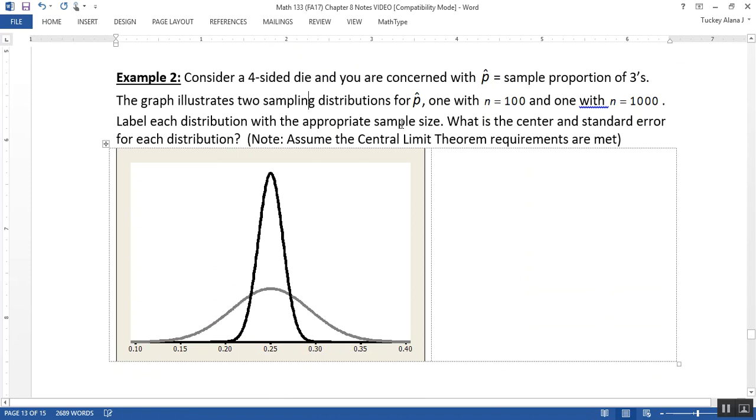Alright, now let's consider we have a four-sided die, and you're concerned with P-hat, which is the sample proportion of threes. So I have two graphs illustrating below the two sample proportion distributions for P-hat. One is with N equals 100, and one is with N equals 1,000. And we're supposed to label each distribution with the appropriate sample size.